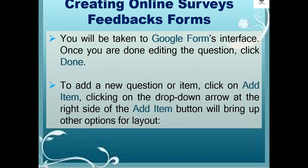You will be taken to the Google Forms interface. Once you're done editing the question, click done. To add a new question or item, click on add item. Clicking on the drop-down arrow at the right side of the add item button will bring up other options for layout.